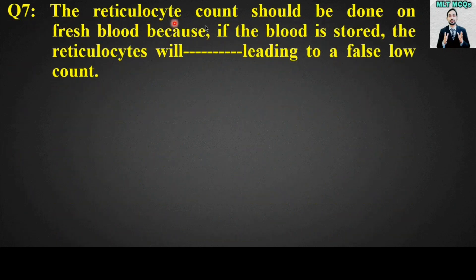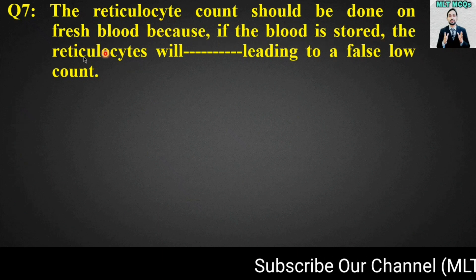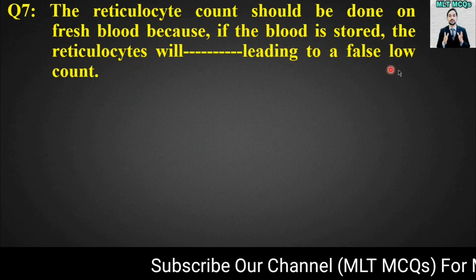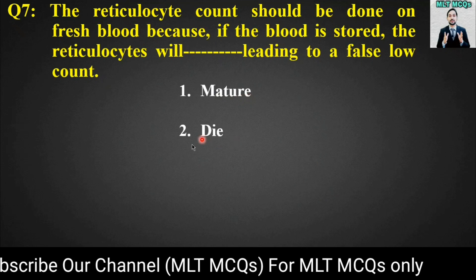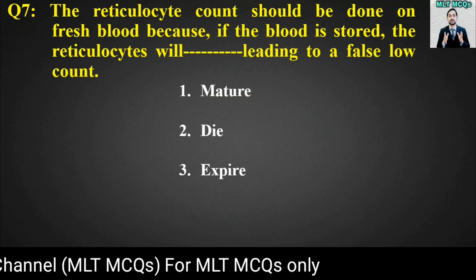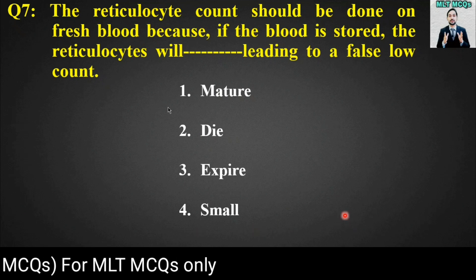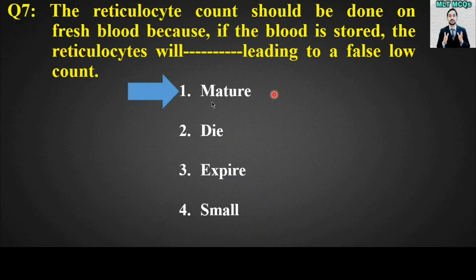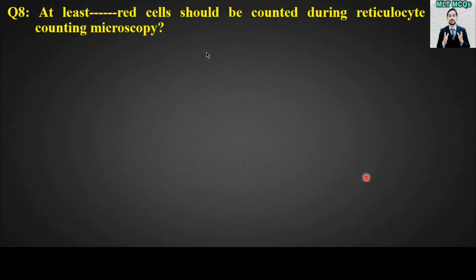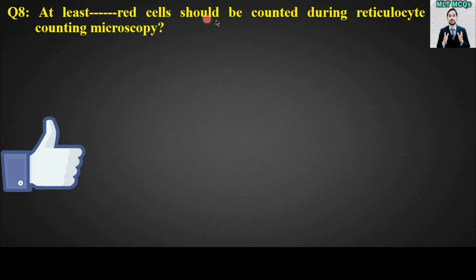MCQ number seven: The reticulocyte count should be done on fresh blood because if the blood is stored, the reticulocytes will blank, leading to a false low count. Options are: mature, die, expire, or small. The right answer is option number one — the reticulocytes will mature, leading to a false low count.